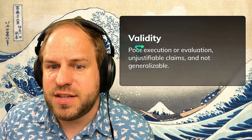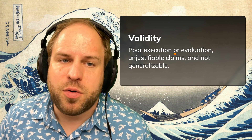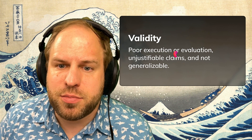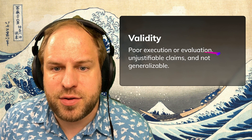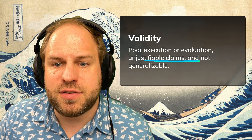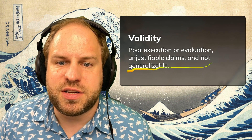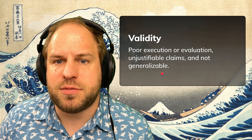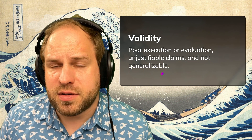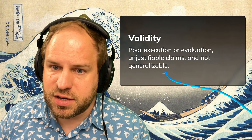Another reason is validity. Maybe it was poorly executed, or maybe you didn't do the appropriate type of evaluation. Maybe your claims weren't justified well enough, and maybe your results were not generalizable. All of these are possible reasons why your CHI papers get rejected.